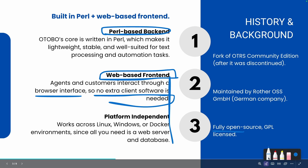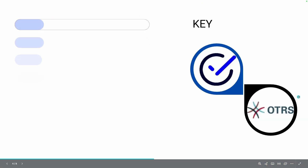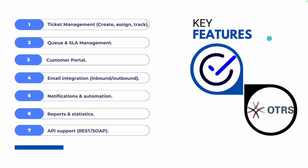Now let's talk about the major key features of OTOBO. First is ticket management: you can create, assign, and track tickets. For example, for customer support queries or a knowledge base system, you can create a ticket and get your issues resolved. You can also manage queues and SLA management.